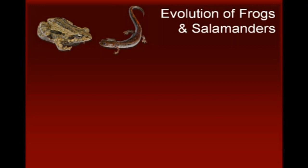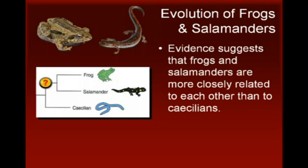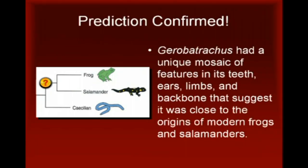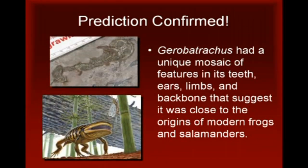The first example involves the evolution of frogs and salamanders from ancient amphibians. Modern molecular studies have suggested that, among the three existing groups of amphibians, frogs and salamanders are more closely related to each other than to the worm-like caecilians. Based on this evidence, paleontologists used evolutionary theory to predict the existence of a creature with a combination of frog-like and salamander-like features that should have existed prior to the earliest known frogs and salamanders in the fossil record. This prediction was confirmed by the discovery in Texas of the fossil remains of Gerobatrachus, a primitive amphibian that existed approximately 290 million years ago, well before the earliest fossil evidence of recognizable frogs and salamanders.